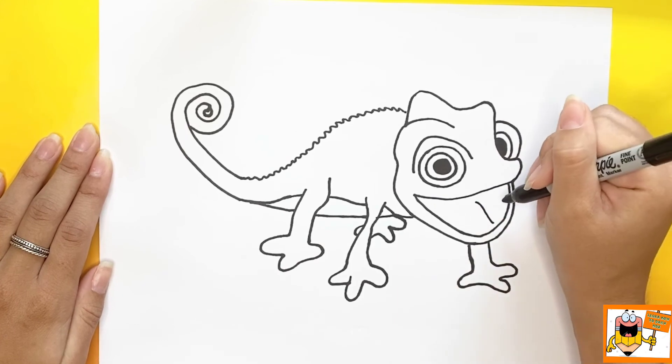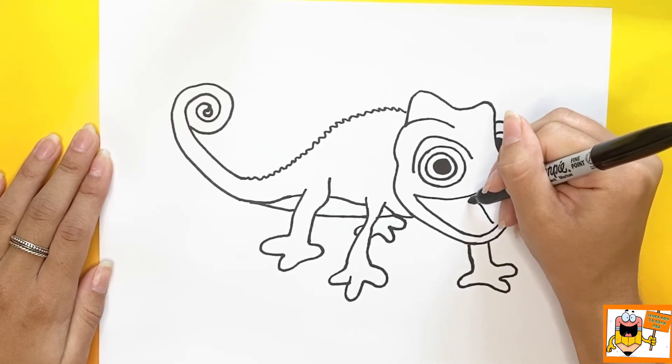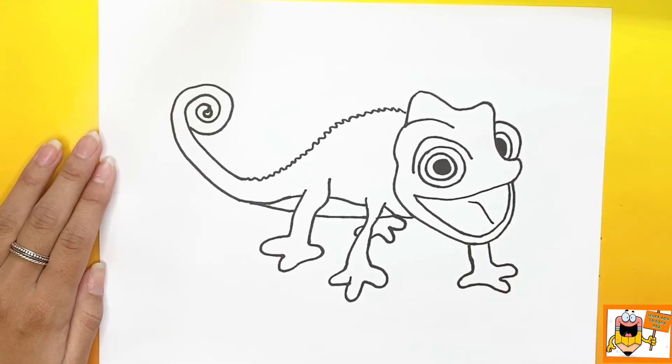We're going to add a line on Pascal's tongue for detail, and then lastly to finish Pascal, we're going to draw circles in the middle of his face.